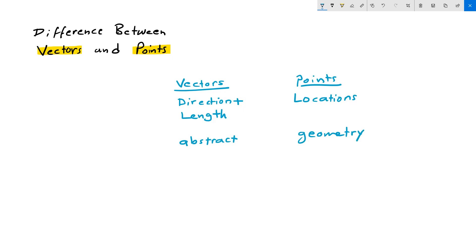Vectors describe the shift in x, y, and z directions, while points describe the exact position of x, y, and z.